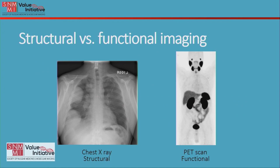Here's a comparison of structural versus functional imaging. On the left is the chest x-ray, and on the right is a PET scan showing functional imaging. You'll notice that a lot of the normal organs we expect to see, like the heart, are missing. That's because the PET scan specifically tells us about function of normal tissues and, in this case, expression of the PSMA antigen, which is specific for prostate cancer.